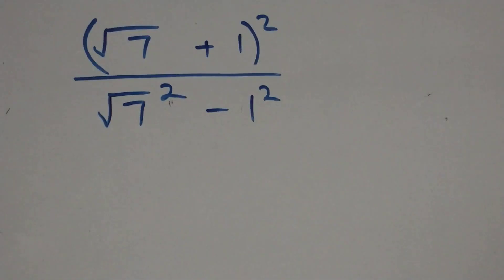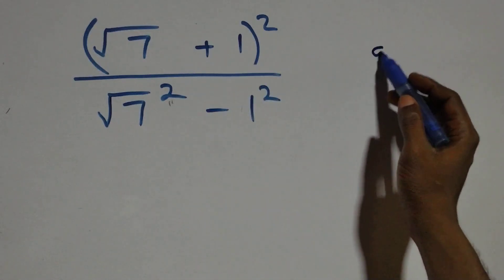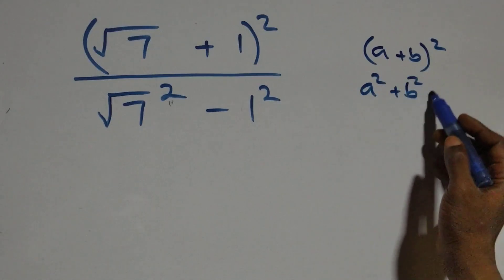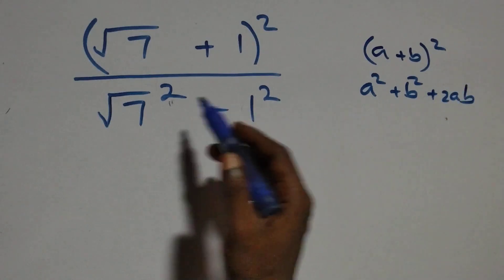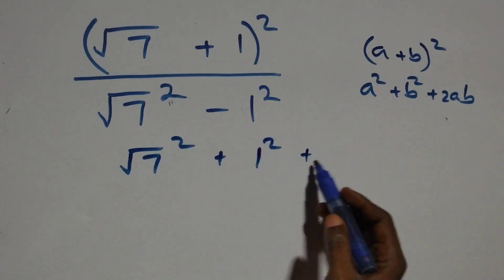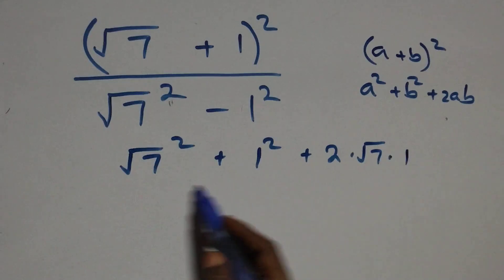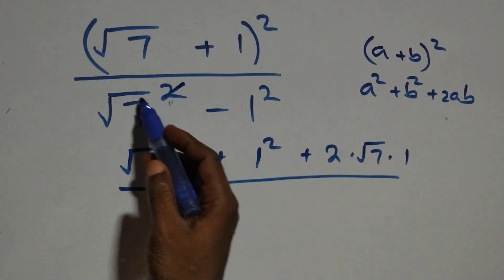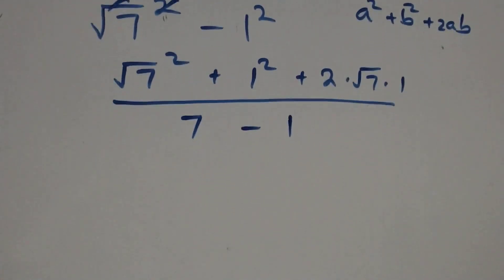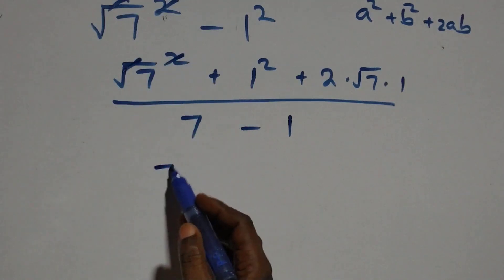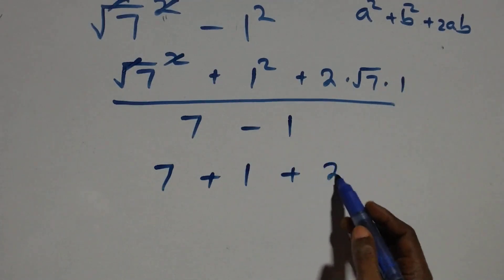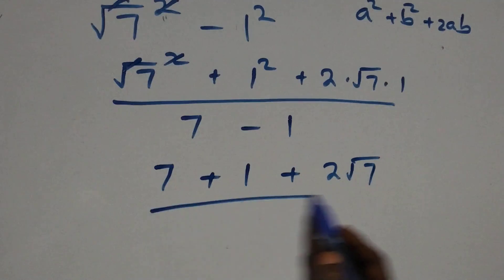The expansion of the numerator follows from a plus b all squared, which equals a squared plus b squared plus two a b. So we have root seven squared plus one squared plus two times root seven times one. Root seven squared is seven, plus one squared which is one, plus two root seven. The denominator is seven minus one, which equals six.